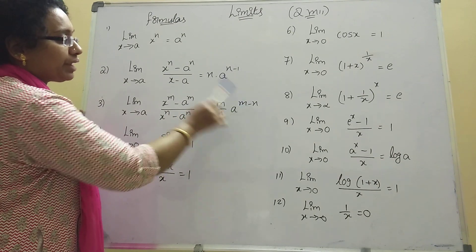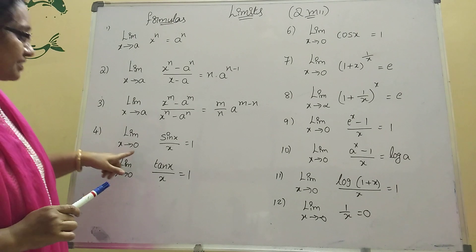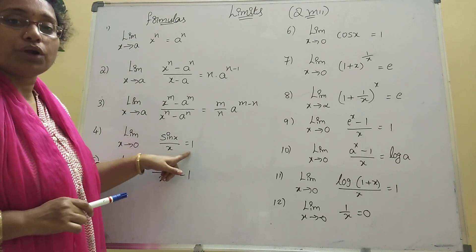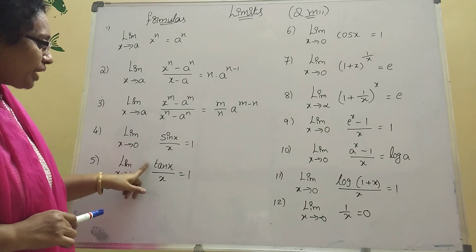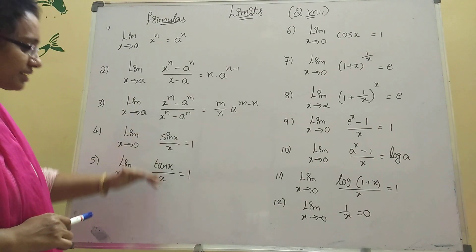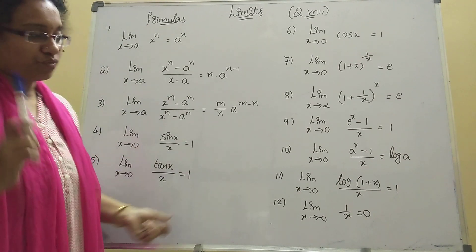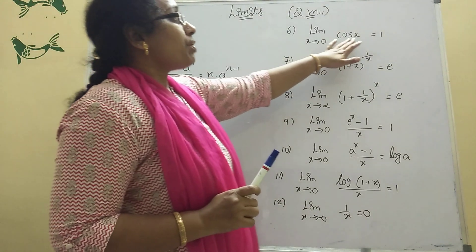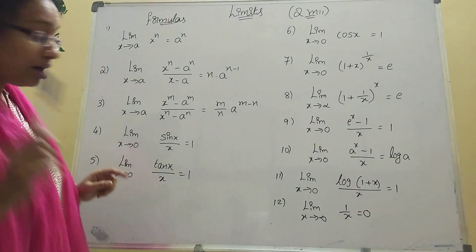Next, Formula 4: limit x tends to 0, sin x by x equals 1. At the same time, limit x tends to 0, tan x by x equals 1. If sin x or tan x is there divided by x, the answer is 1. Next, Formula 6: limit x tends to 0, cos x equals 1.